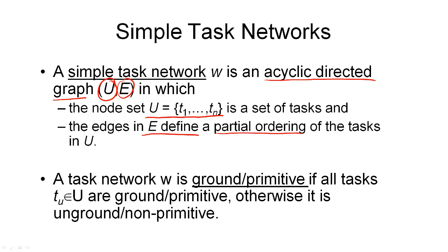I will use the same notation we've seen previously. I can say that a task ti comes before a task tj by using this symbol. That's a task network consisting of a set of tasks and a set of edges that form an acyclic directed graph.